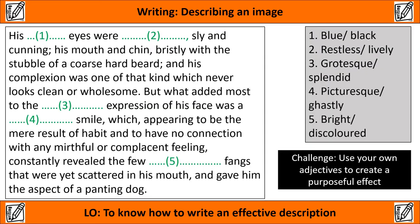Sentence B was actually written by Charles Dickens and it is the start of a description of one of his characters — a villain. On the screen now is the rest of the paragraph that continues that description, and your first task is to choose the most appropriate adjectives from the grey box to place into that paragraph at the points indicated. Remember that the effect Dickens was creating was that of a villainous character. If you want to add an extra level of challenge, you could use your own adjectives to create a purposeful effect. You have one minute — for numbers one to five, write down what you think the adjective should be to create an effective description of a villainous character.